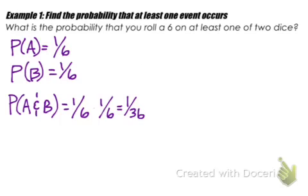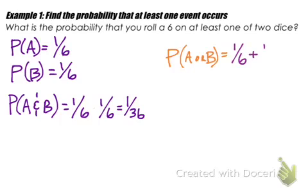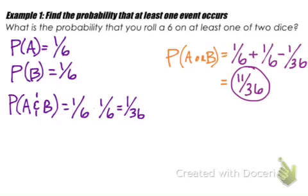For the addition rule, we want the probability of rolling a 6 on at least one of the two dice, so that's the probability of A or B. The first die could be a 6, or the second die could be a 6 — that's 1/6 plus 1/6, minus the overlap that we might roll two 6s, which is 1/36. So we get 11/36 as the probability of having at least one 6 on one of the dice.